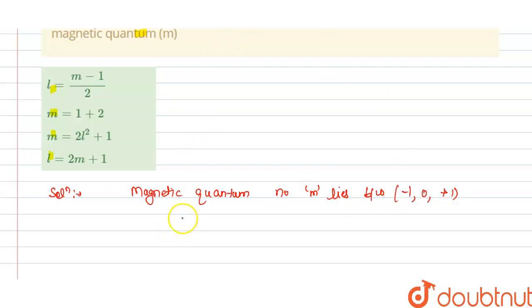So total possible values of M will be 2L plus 1.